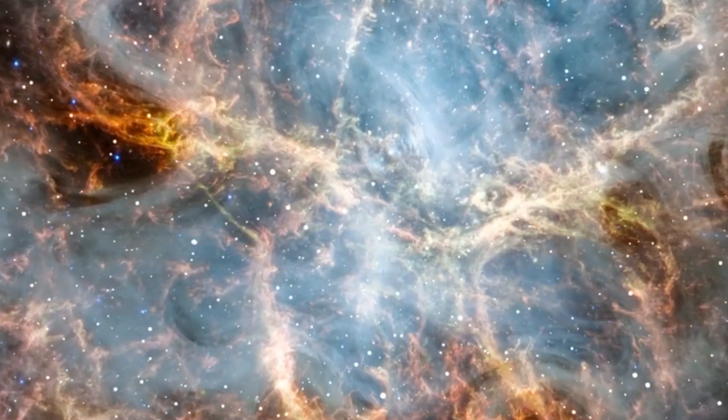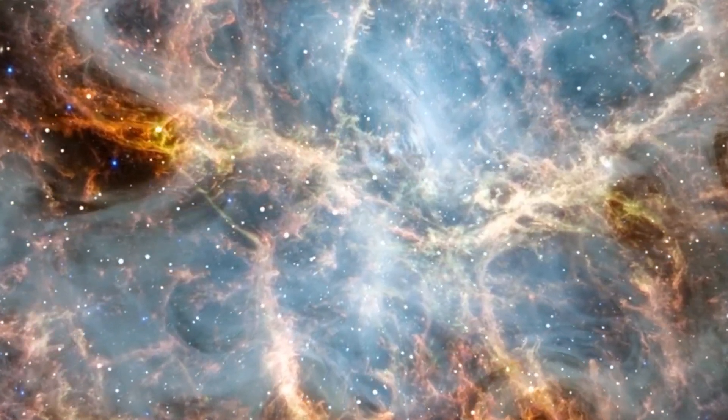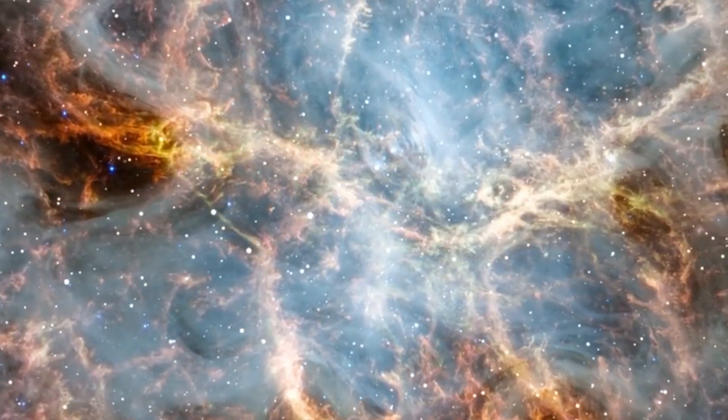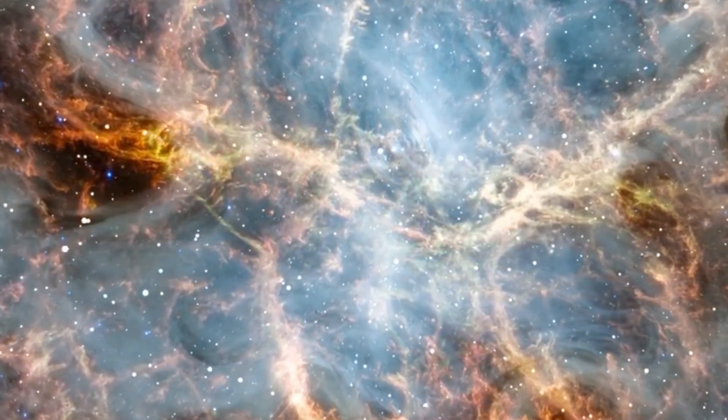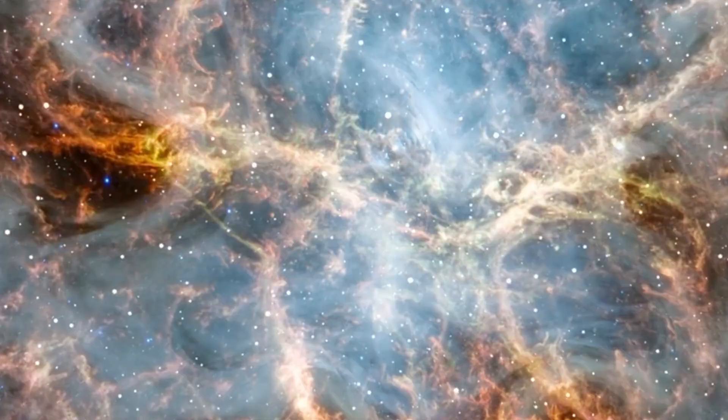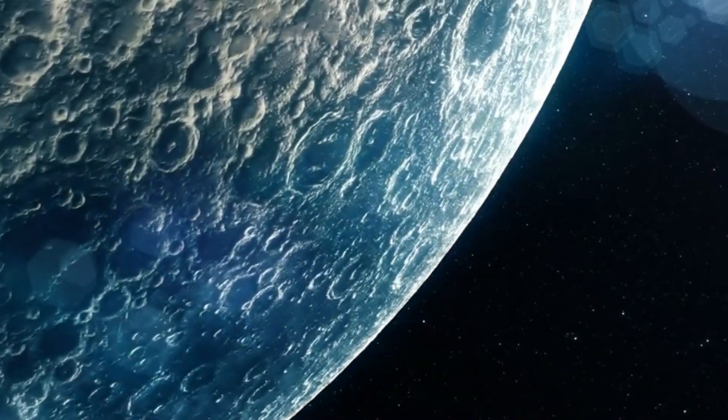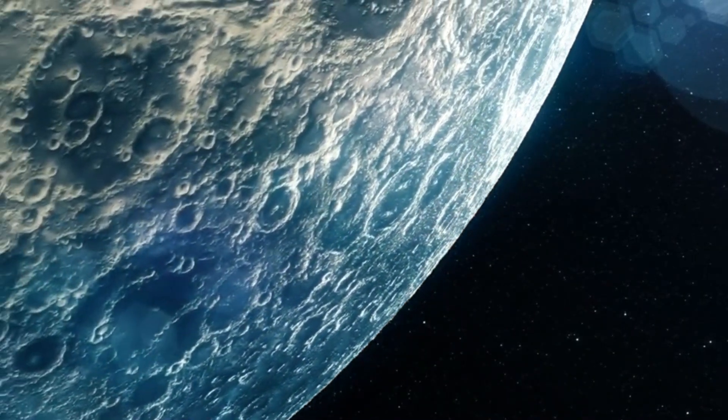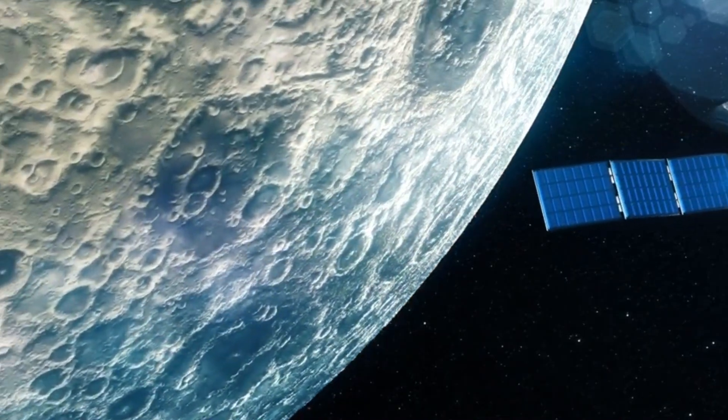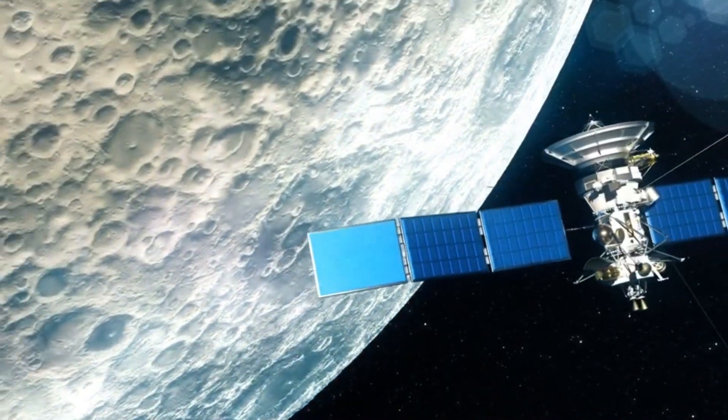Finally, there's WASP 107b, a super-Neptune orbiting a star in the Virgo constellation, discovered by the James Webb Space Telescope. This planet orbits its star every six days and has a density so low that it's been dubbed the fluffiest planet we've discovered.